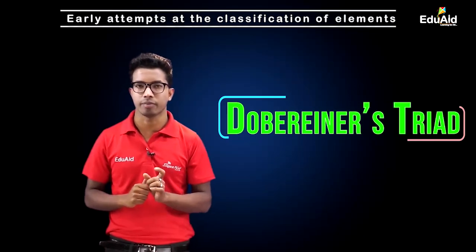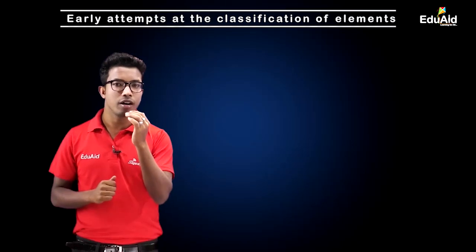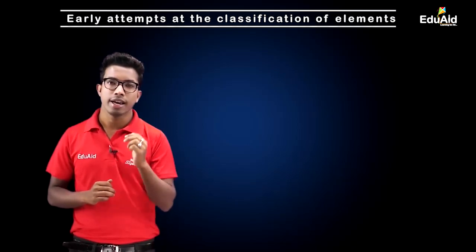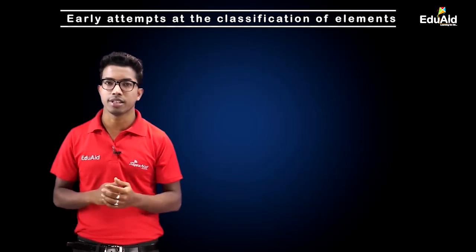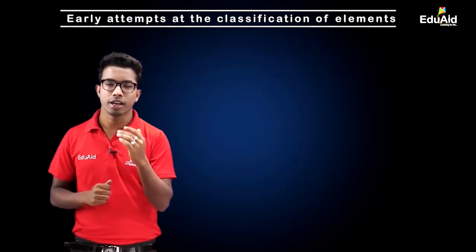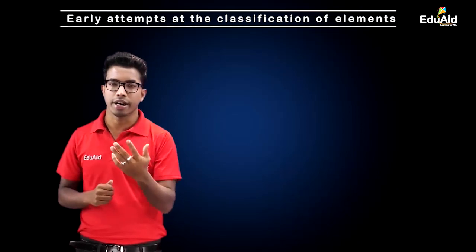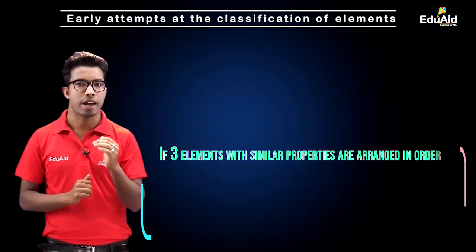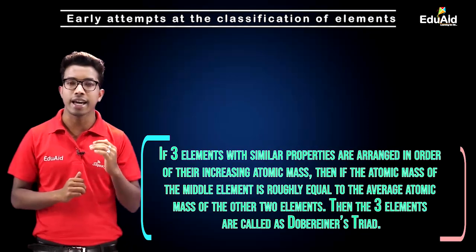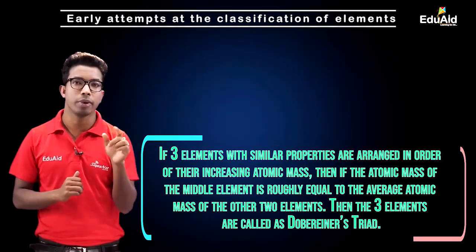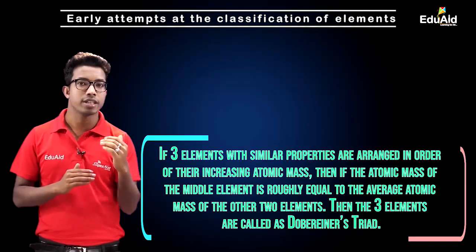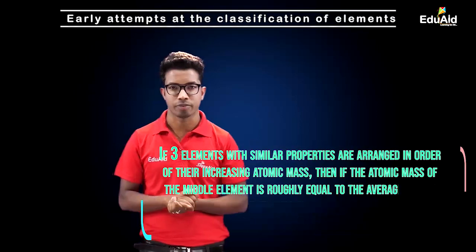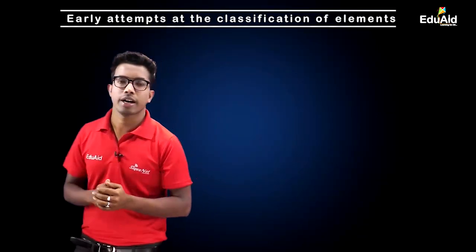In Döbereiner's Triads, if all the elements are arranged in order of their increasing atomic mass, then the atomic mass of the middle element is roughly equal to the average atomic mass of the other two elements. So the definition of Döbereiner's Triads is: when three elements having similar properties are arranged in order of increasing atomic mass, and the atomic mass of the middle element is roughly equal to the average atomic mass of the other two, those three elements are said to be in a Döbereiner Triad.